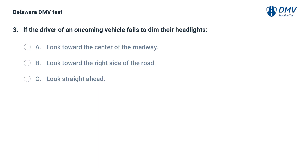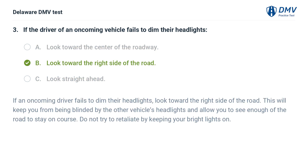If the driver of an oncoming vehicle fails to dim their headlights: A. Look toward the center of the roadway. B. Look toward the right side of the road. C. Look straight ahead. Answer: B. Look toward the right side of the road. If an oncoming driver fails to dim their headlights, look toward the right side of the road. This will keep you from being blinded by the other vehicle's headlights and allow you to see enough of the road to stay on course. Do not try to retaliate by keeping your bright lights on.